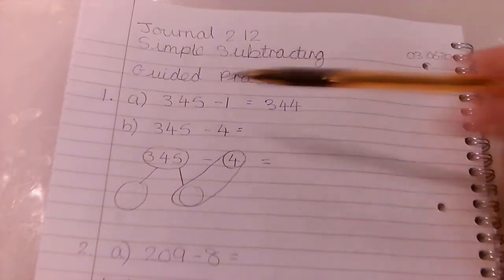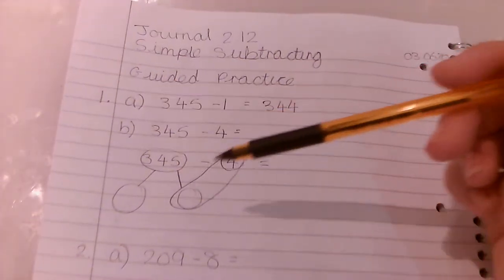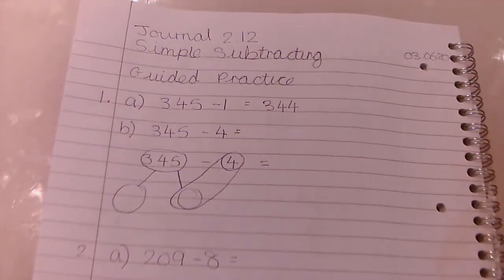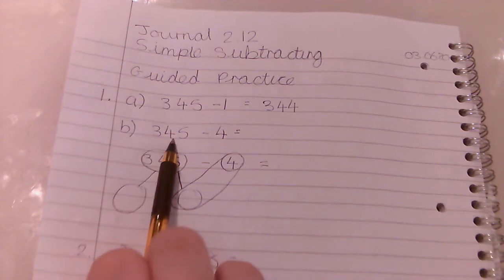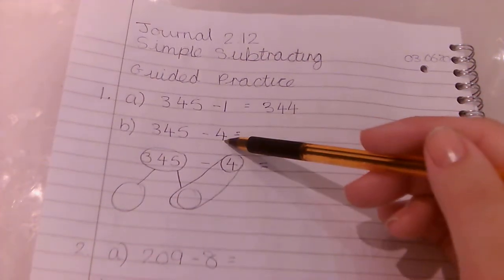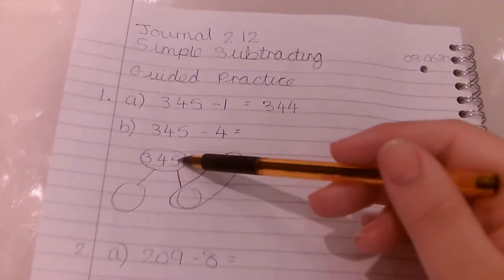Okay, now for question number 1B we're going to use number bonds to help us with this one. So this is 345 take away 4. Now we know 4 is in the ones column, so we only really need to look at the ones for this one. So we're just going to pull apart 345.